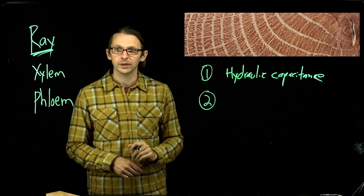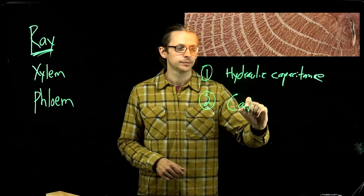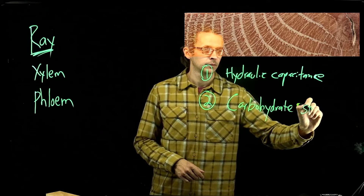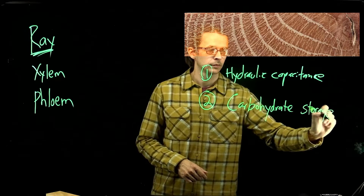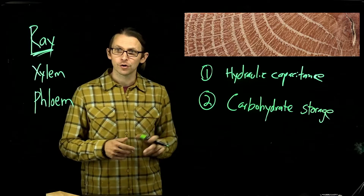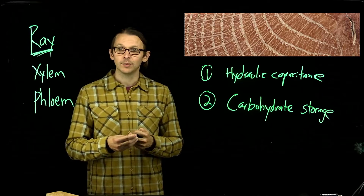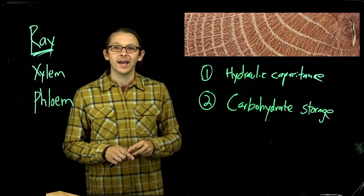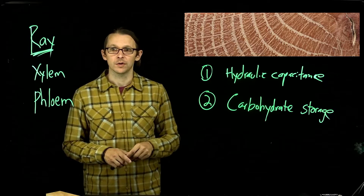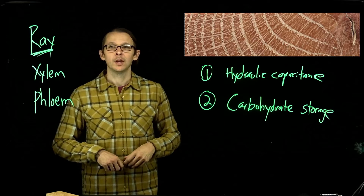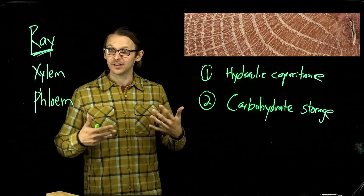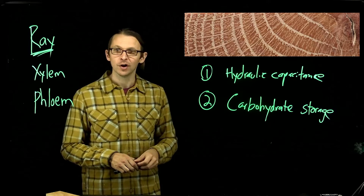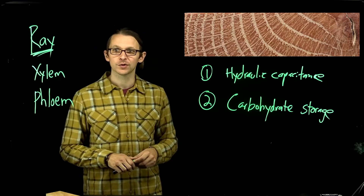Another really important function of rays is carbohydrate storage. Trees are large, long-lived organisms that need to be able to survive disturbances, bad years, and drought years — they need to be able to store resources to be used later. I have a layer of fat that allows my body to have stored energy reserves so I can survive if I fast or don't eat for a week. My body can consume those reserves to make that happen.